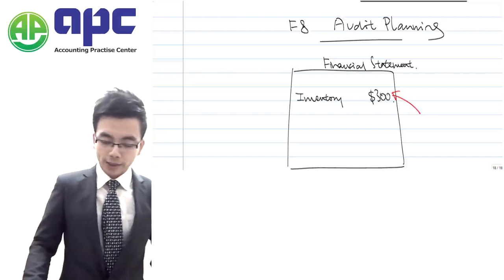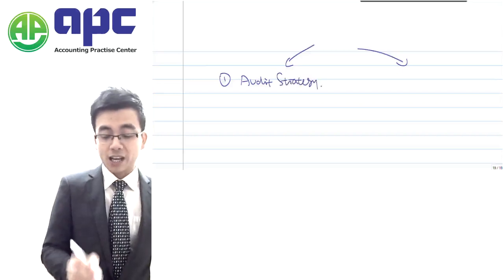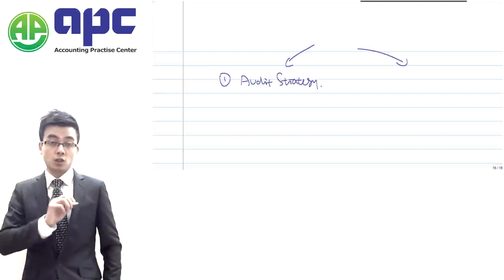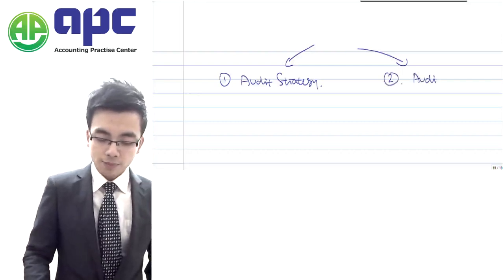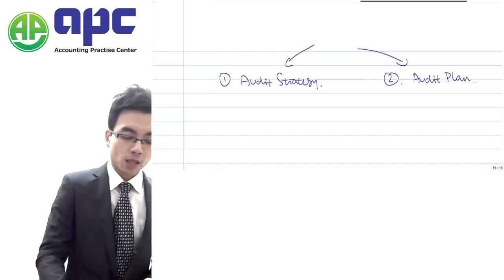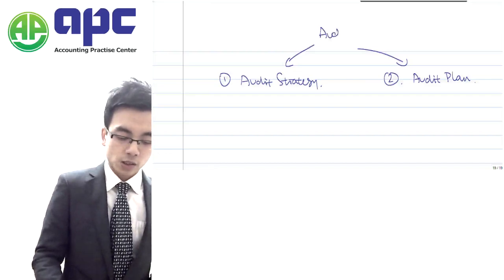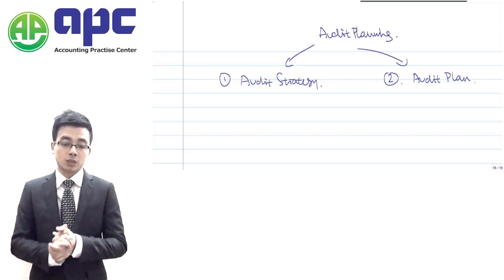From the auditor's point of view, we're going to make sure that all of those figures within the statement of financial position are absolutely correct. So what we need to do is to plan how we're going to check it — that's what I mean by audit planning. Within the audit planning, we are going to do two tasks. Firstly, we are going to set up an overall audit strategy of how to check whether or not the $300 would be correct or wrong. And secondly, we're going to develop a detailed audit plan about the detailed procedure.